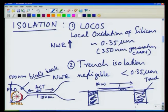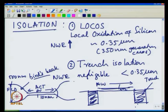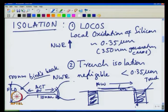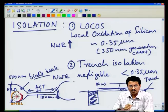In trench isolation, if you have a very thick oxide right at the edge of the active area, the fringing field there will be very small, so narrow width effect is minimal. In LOCOS, the oxide at the edge is thin where it matters, making fringing fields strong. Trench isolation is therefore used for all technologies below 0.35 micron — it minimizes both the narrow width effect and the bird's beak problem. We will focus on device physics and not go into the processing details here.